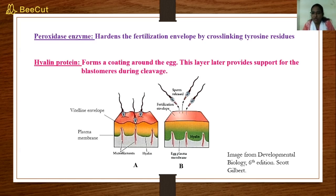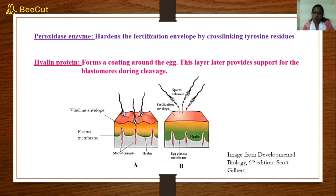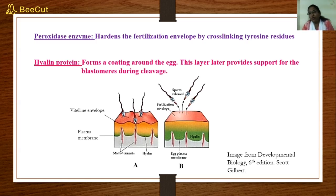The next component is peroxidase, which hardens the fertilization envelope by cross-linking tyrosine residues. The last component is hyaline protein, which forms a coating around the egg. This layer later provides support for the blastomeres during future cleavages.